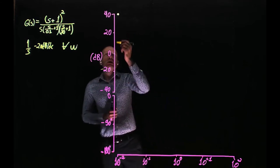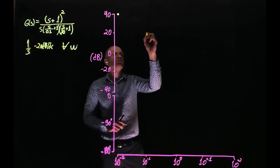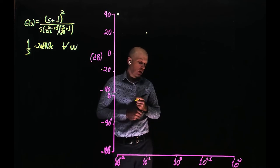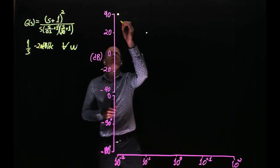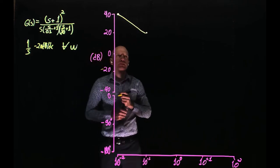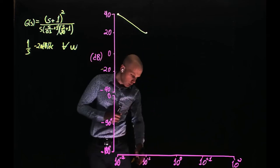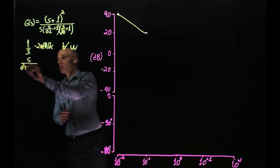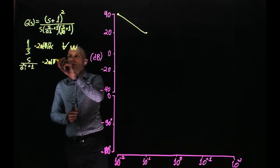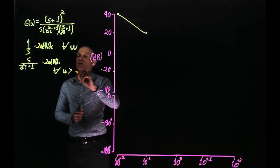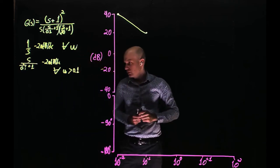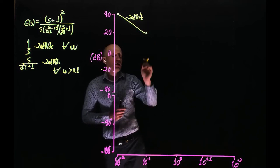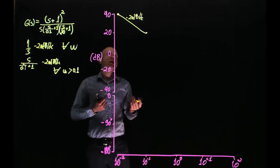So we are starting at 40 decibels at 0.01 radians per second. If we increase the frequency by 10, we go down by 20, so at 0.1 we have 20 dB. At 10 to the power of 0, we would have 0 decibels. The problem is that when you cross 0.1 radians per second, we have a pole. This pole will add another negative 20 dB to the existing slope for all frequencies greater than 0.1. So the slope up to 0.1 is negative 20 dB per decade.